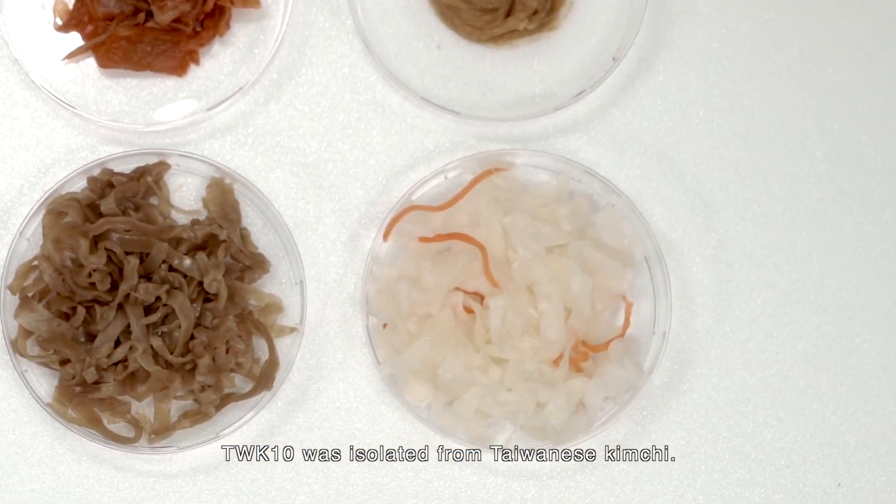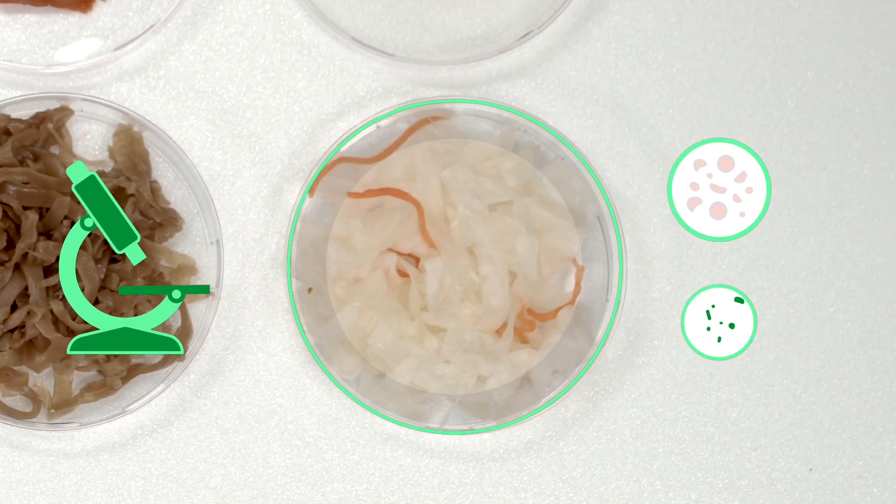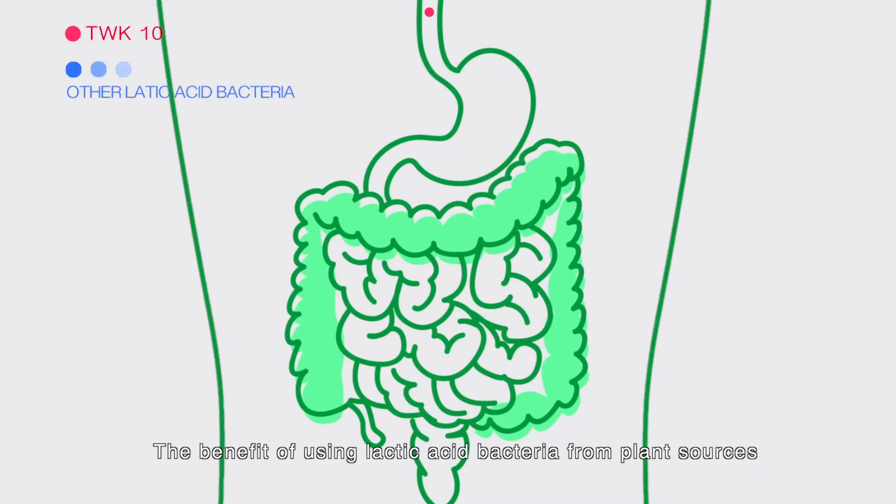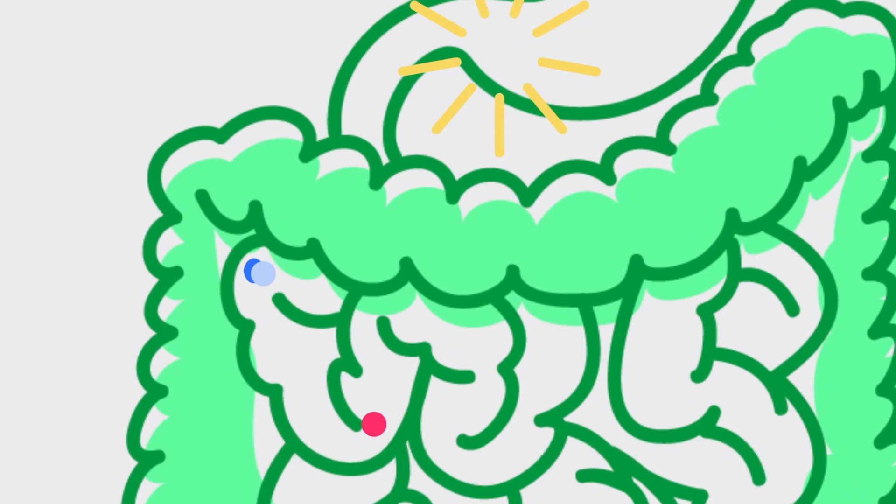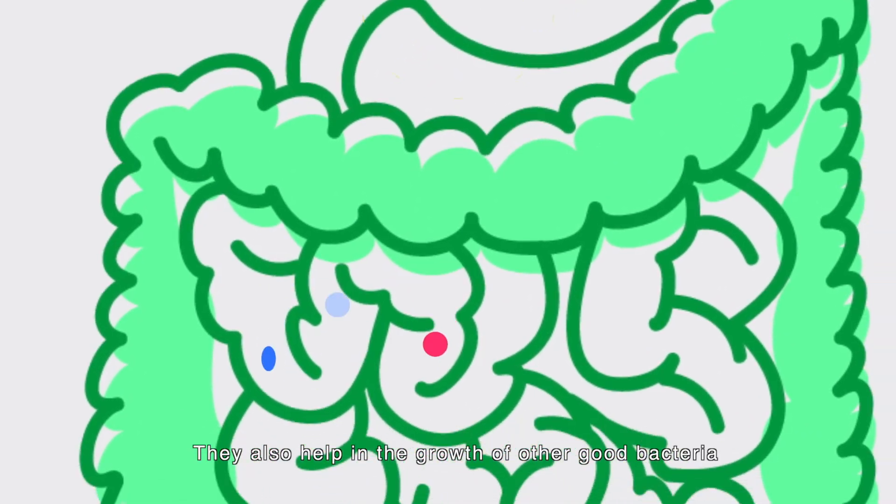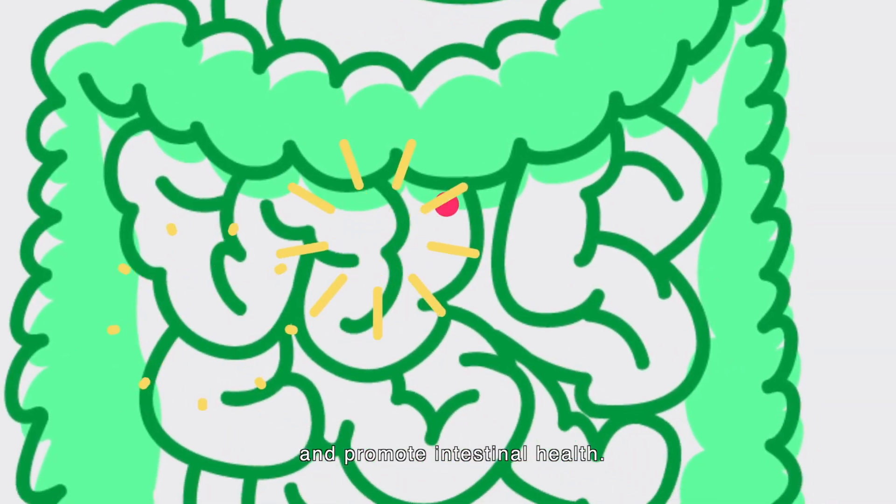TWK10 was isolated from Taiwanese kimchi. The benefit of using lactic acid bacteria from plant sources is the ability to pass through the gastrointestinal tract. They also help in the growth of other good bacteria and promote intestinal health.